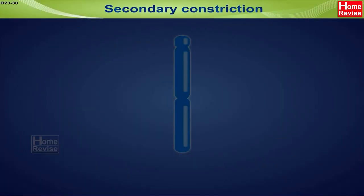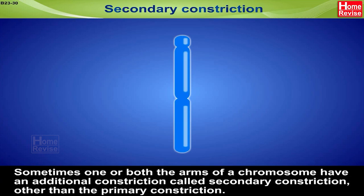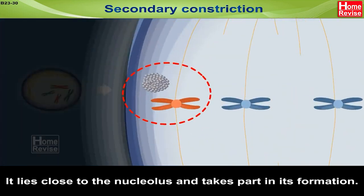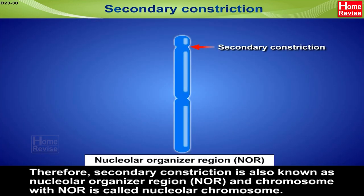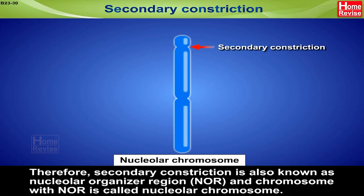Secondary constriction: Sometimes one or both arms of a chromosome have an additional constriction called secondary constriction, other than the primary constriction. It lies close to the nucleolus and takes part in its formation. Therefore, the secondary constriction is also known as the Nucleolar Organizer Region (NOR), and a chromosome with NOR is called a Nucleolar Chromosome.